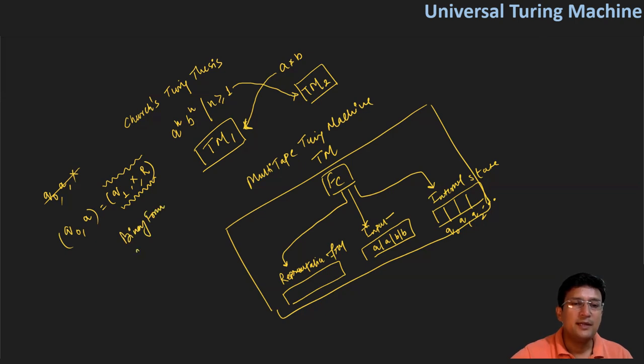Similarly, whatever states we have, the mapping of those states or the encoding of states, we also have to do in binary form. And the left-right movement that we do, its representation will also be in binary form. According to this, we will put values in binary form in the representation of Turing machine.